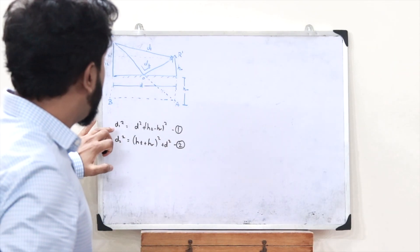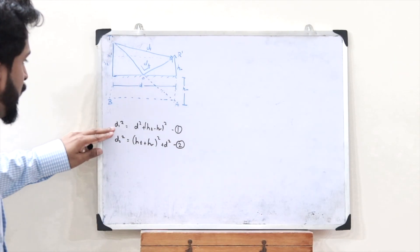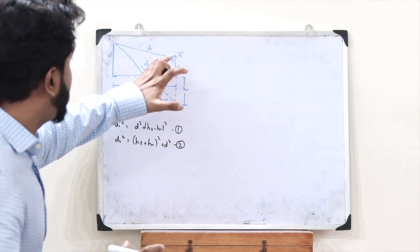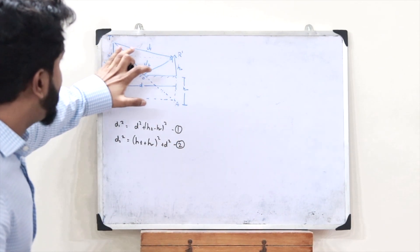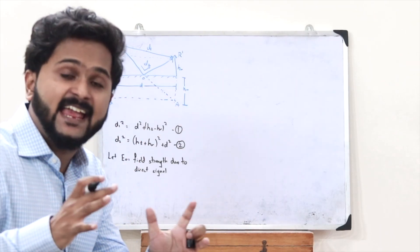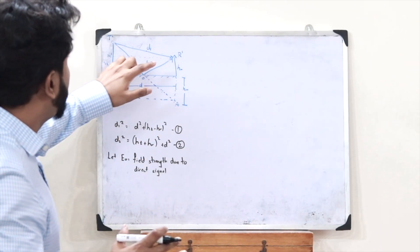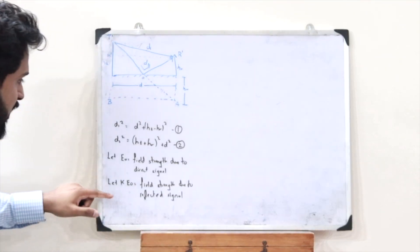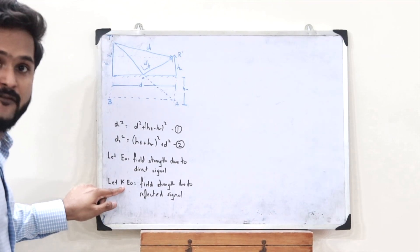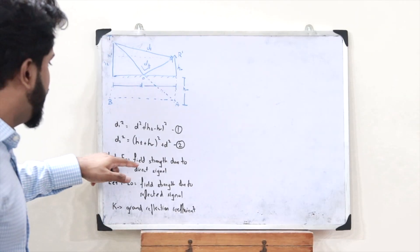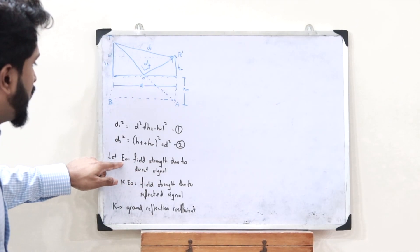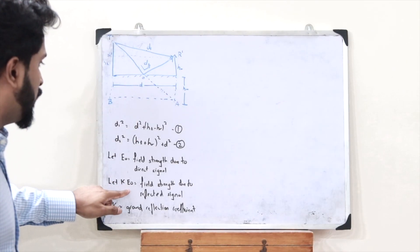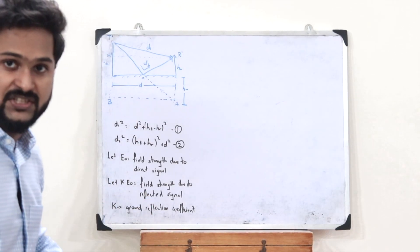Now, let E0 be the field strength at the receiver due to the direct signal, and let KE0 be the magnitude of the field received at R' due to the reflected signal, where K is the ground reflection coefficient.